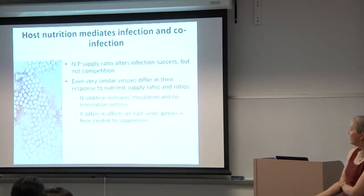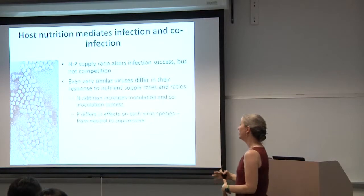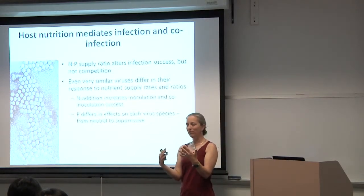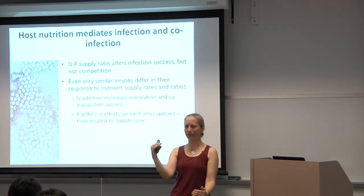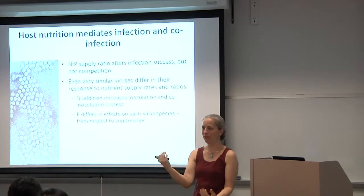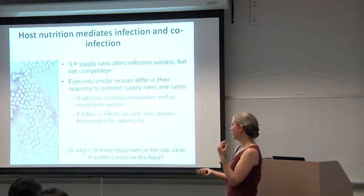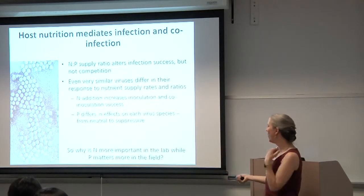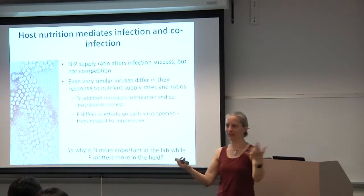Nitrogen addition tends to increase inoculation and co-inoculation success for both viruses. Whereas phosphorus really differs — but it seems to be completely counter to what we found in the field: it seems to either have a neutral or suppressive effect on the ability of viruses to infect hosts. So why is nitrogen more important in the lab and phosphorus seems to matter in the field? I spent a long time scratching my head over this, trying to think about what would be the next study to do.